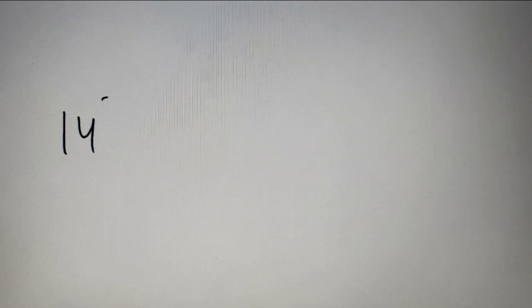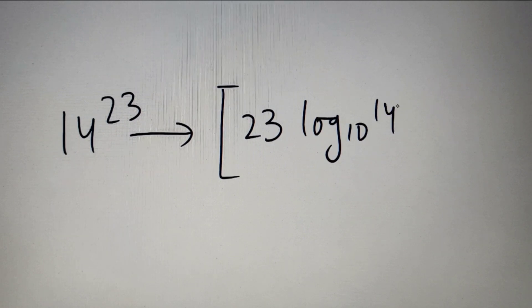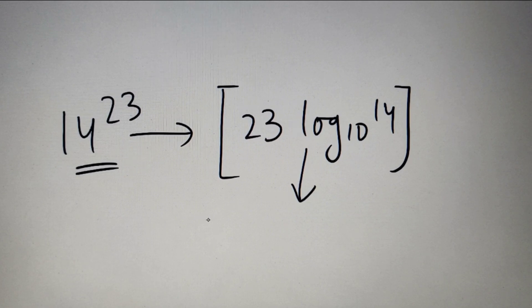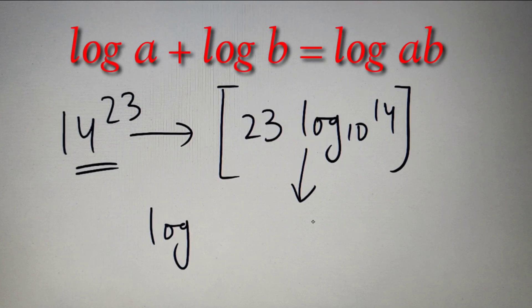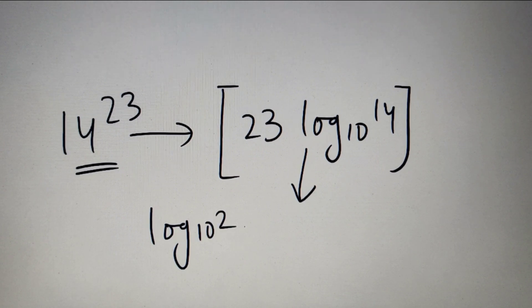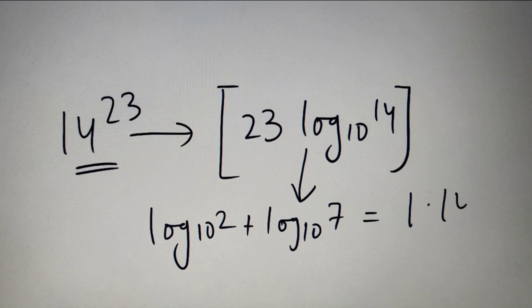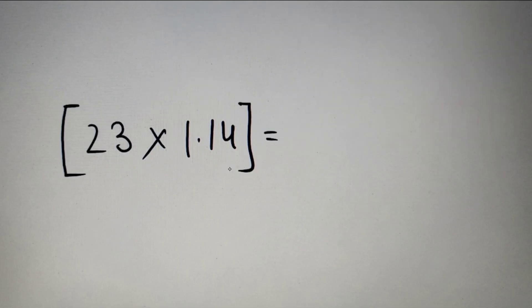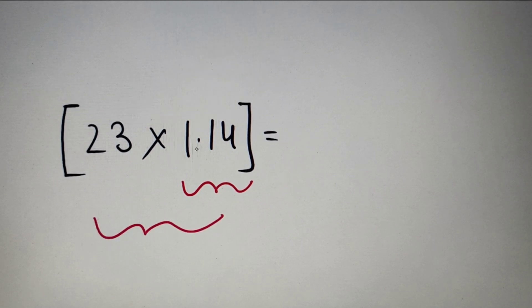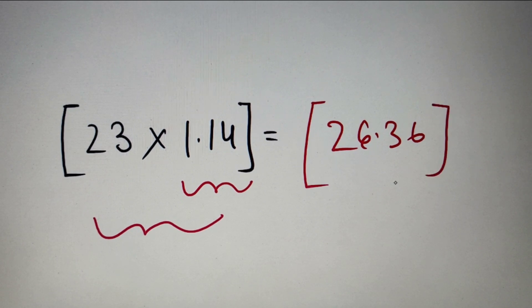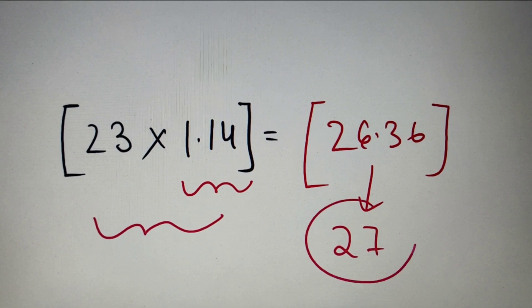In our next question we have to calculate the number of digits of 14 raised to the power 23. So we just have to put this in the formula and calculate the greatest integer value of 23·log 14, base 10. For solving this we first find the value of log 14 using the formula log(A×B) = log A + log B. So log base 10 of 2 plus log base 10 of 7 equals log 14, because 2 × 7 = 14, and upon calculation this comes out to be 1.14. Now we calculate 23 × 1.14 = 26.36. The greatest integer value of 26.36 is equal to 27. So the number of digits of 14 raised to the power 23 is equal to 27.